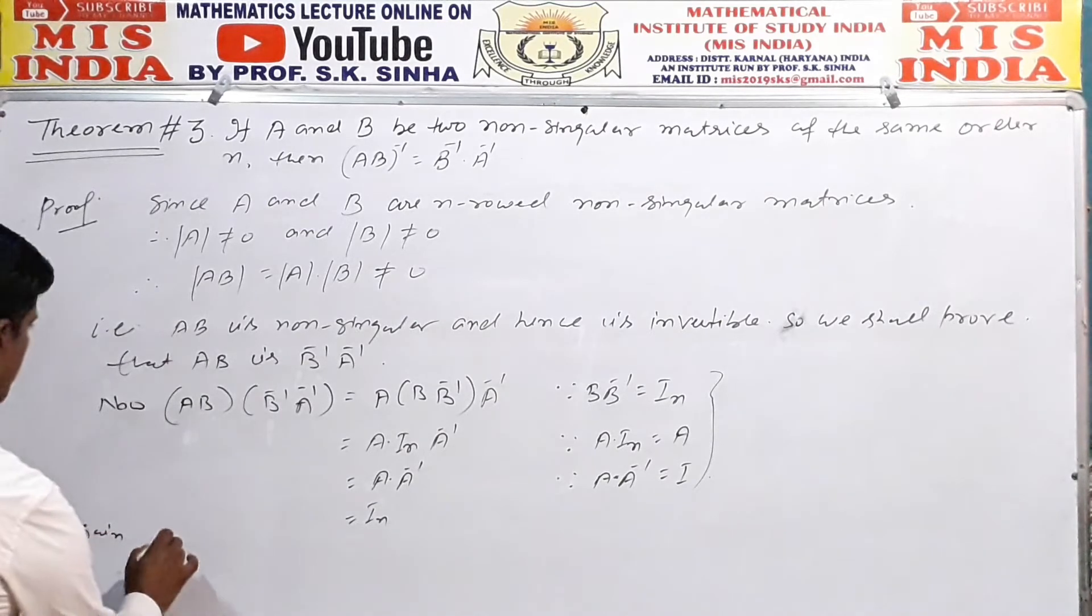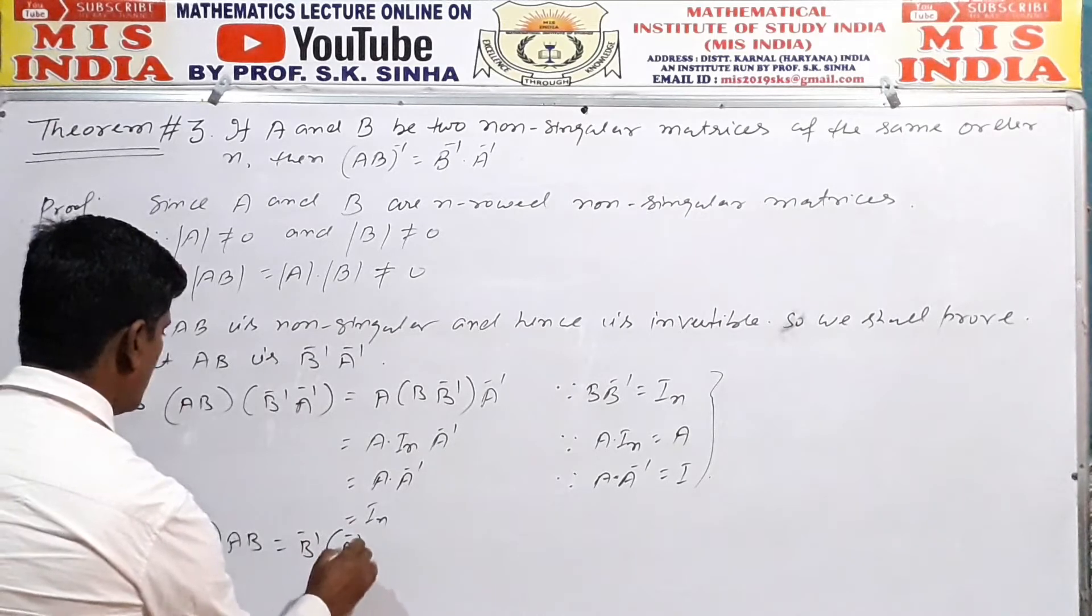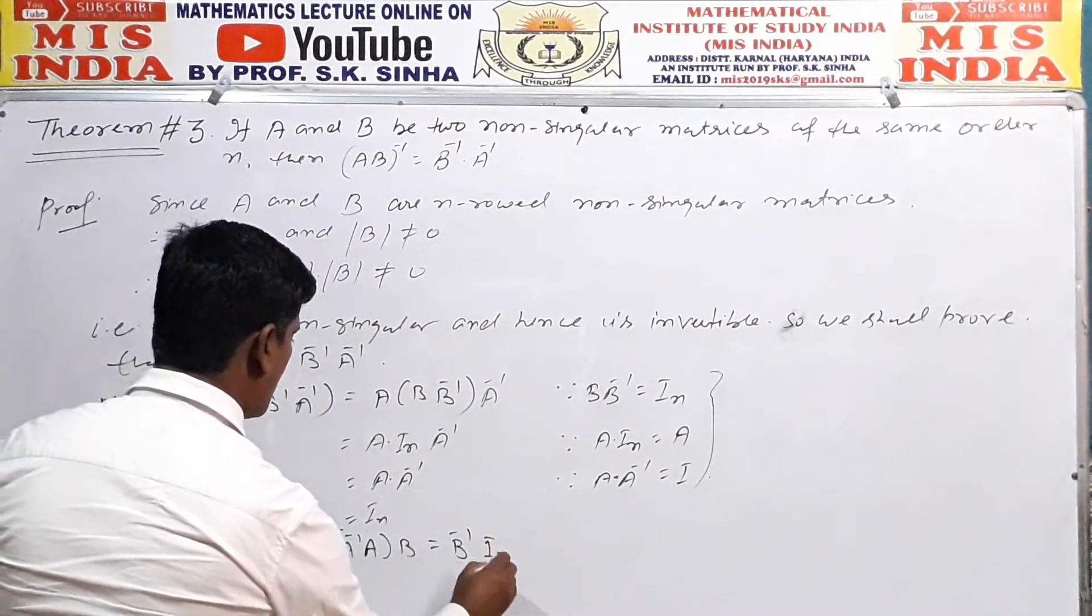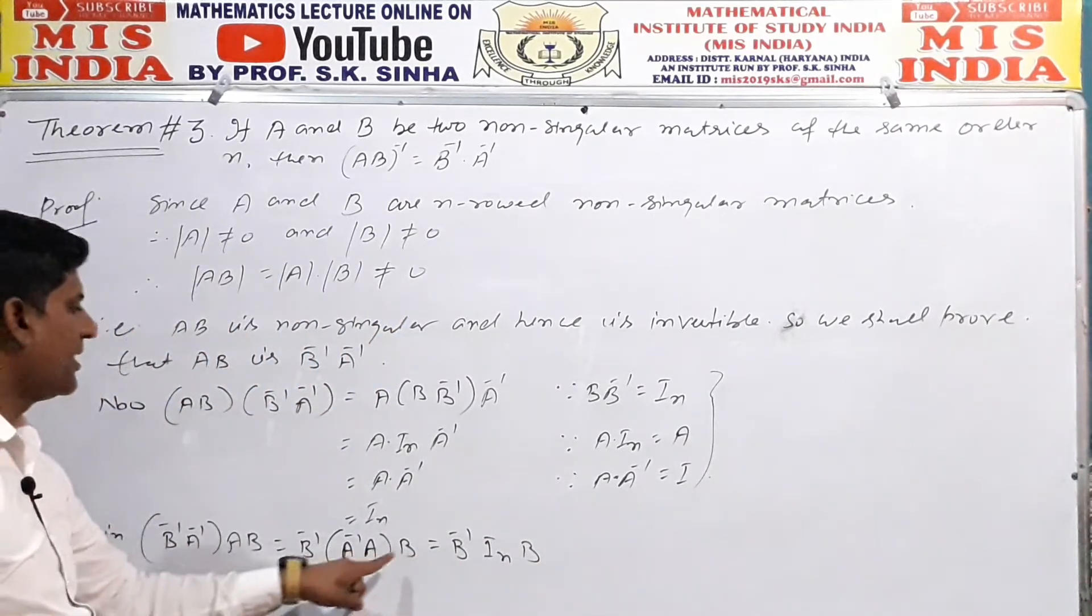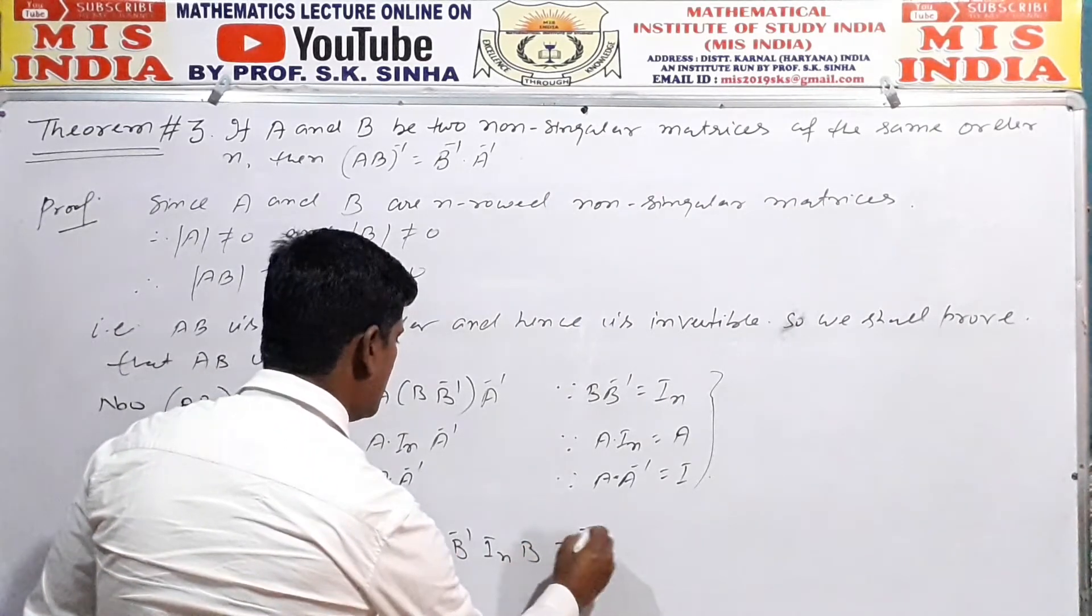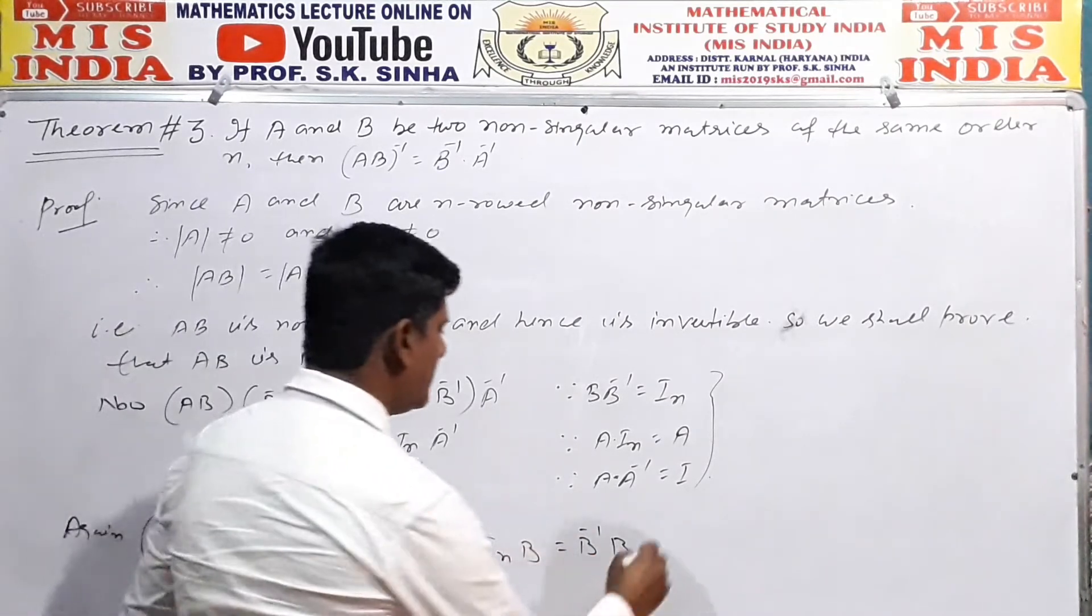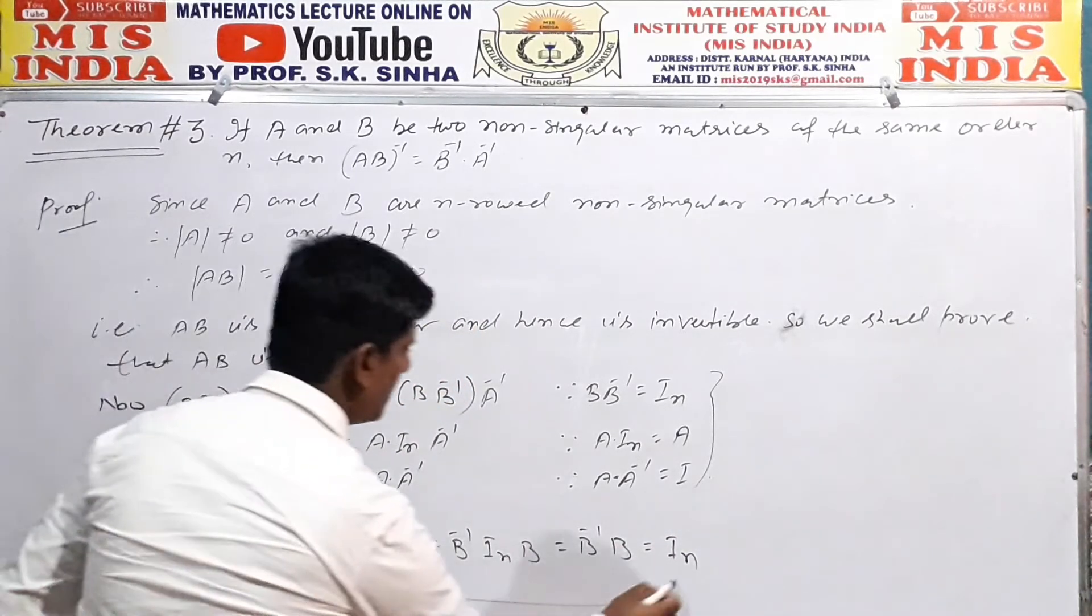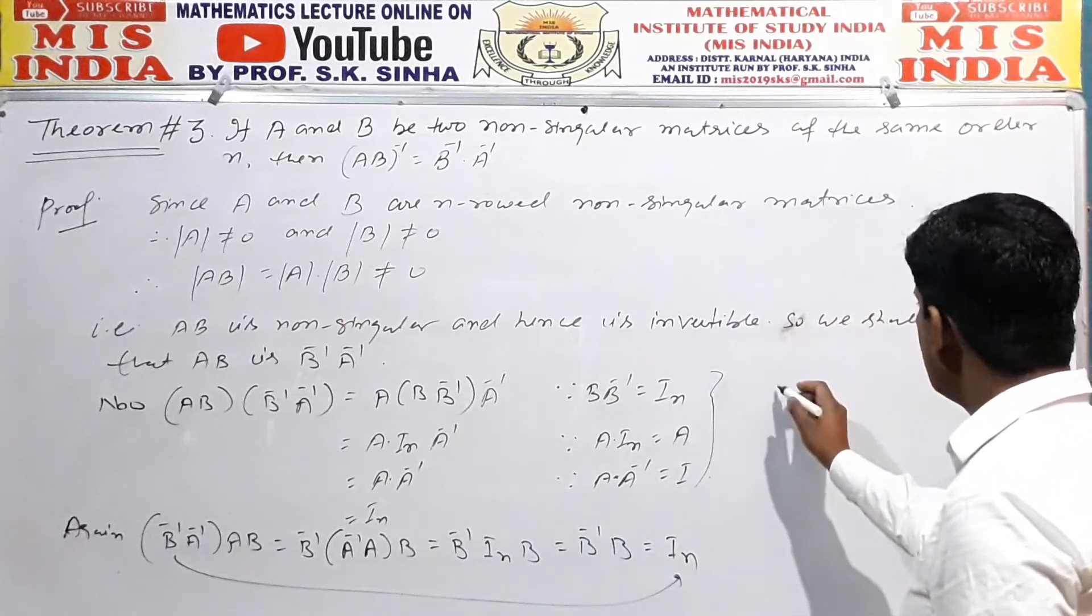Again, B inverse A inverse into AB equals B inverse A inverse into AB equals B inverse into A inverse A into B, which equals B inverse into identity I_n into B, which equals B inverse into B, equals identity I_n.